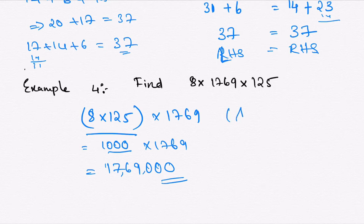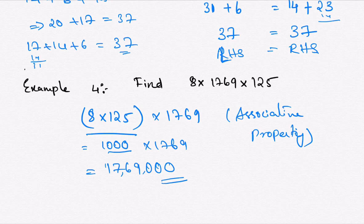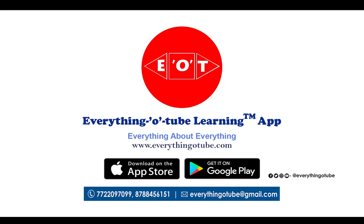This is how we can use the associative property. In this example, without much calculation or solving on paper, we easily got the answer. We solved a larger number in just two or three simple steps by using the associative property.